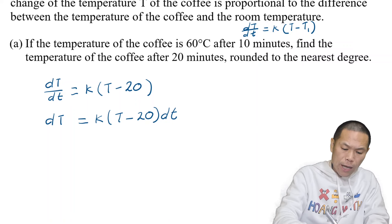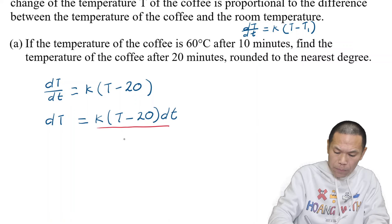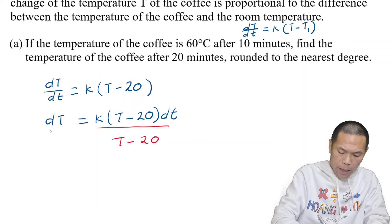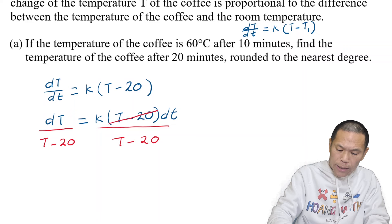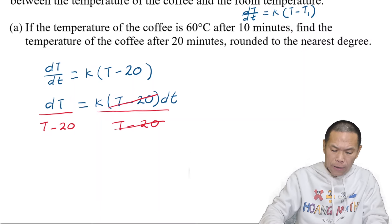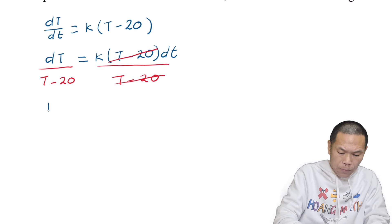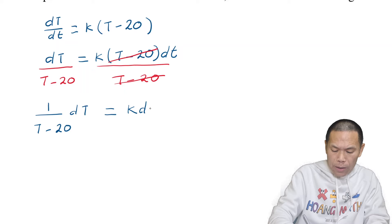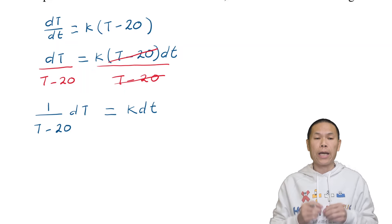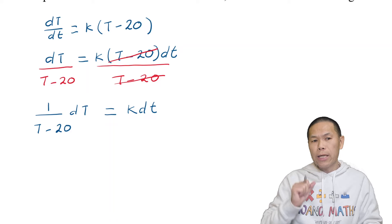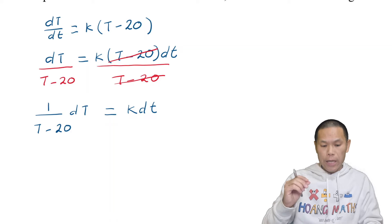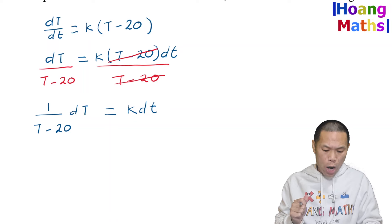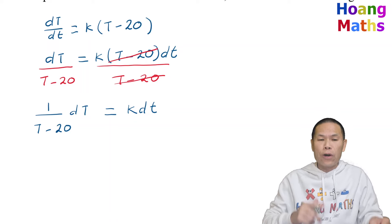To separate the variables, I divide both sides by (T minus 20), so they cancel out. This means that one over (T minus 20) dT equals k dt. Remember: small t is the time and capital T is the temperature of the coffee. Now we integrate both sides.